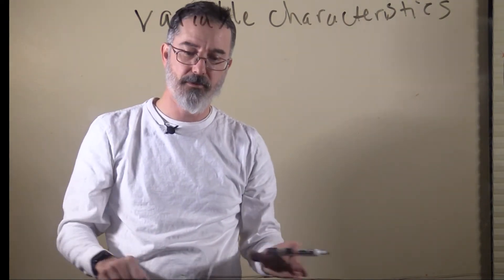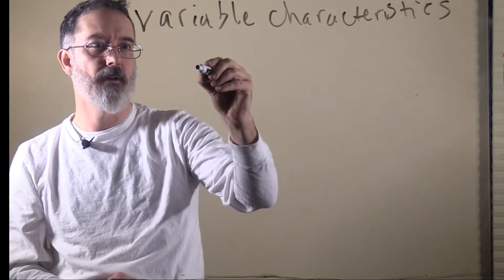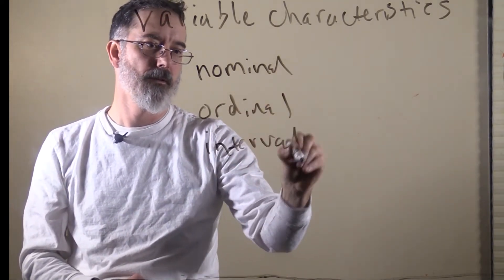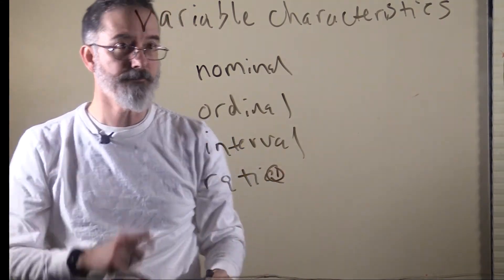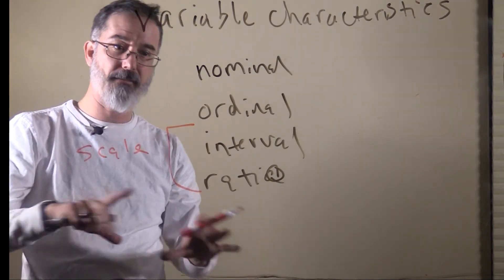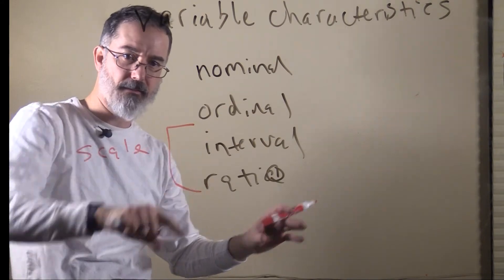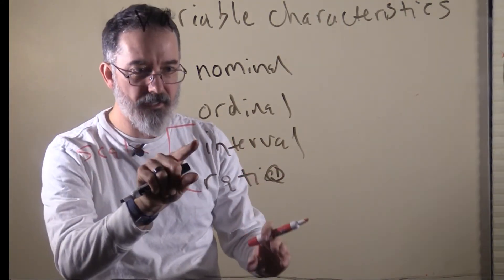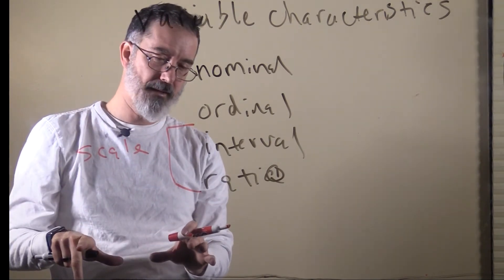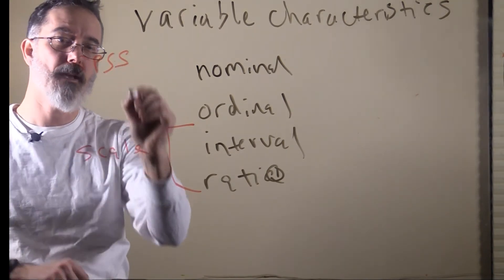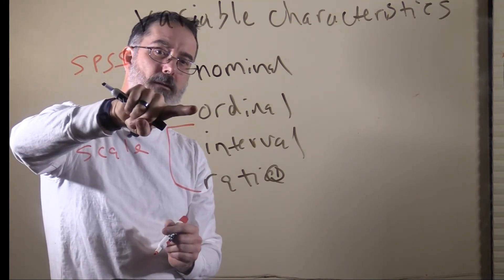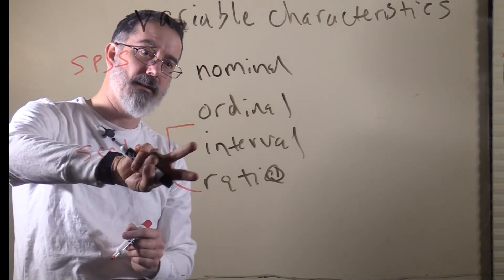There is one final characteristic of variables I want to talk about, and this relates to the scales of measure: nominal, ordinal, interval, and ratio. Variables can be called 'scale.' A variable is scale if it is interval or ratio. If it is nominal or ordinal, it is not scale. This is important because the computer program we will use, called SPSS, when you specify the scale of measure for a variable, the options are nominal, ordinal, and scale — where scale refers to either interval or ratio.